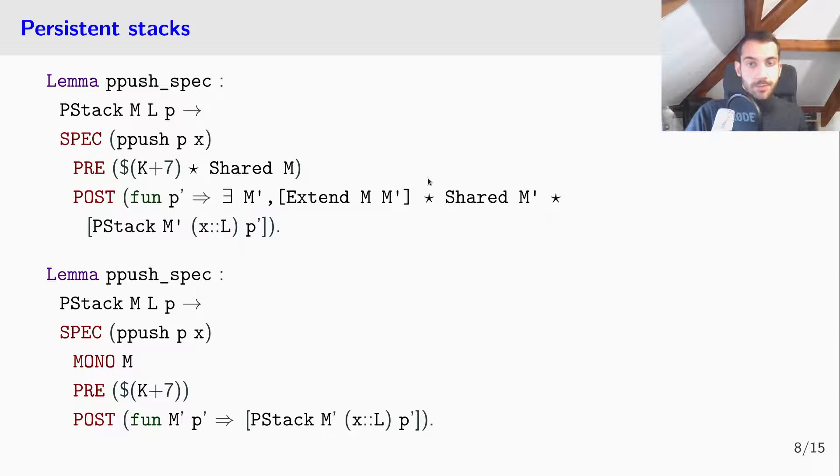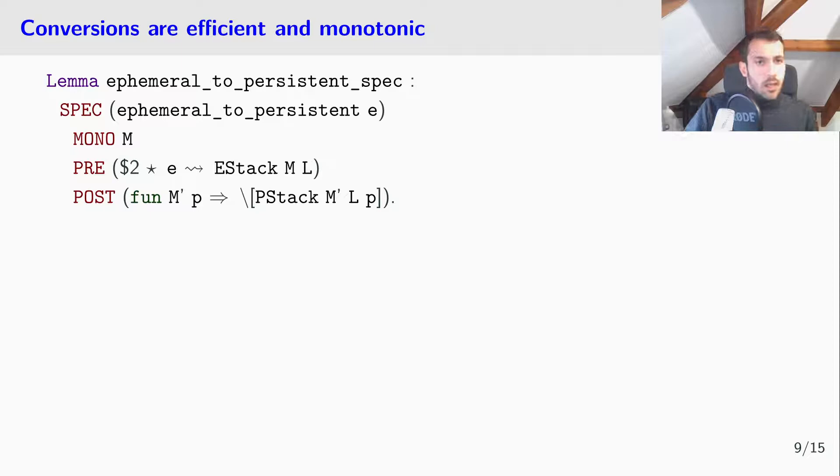Now, let's see conversions. For example, we can go from ephemeral to persistent. So, if I have a new stack e, which represents a stack of model l, then ephemeral_to_persistent will destruct this ephemeral stack and produce a new persistent stack p, which represents the same stack. Here, we require two time credits, so a constant number of time credits, so we are in constant time, and we are monotonic in the shared memory. Why? Because ephemeral_to_persistent will share all of the uniquely owned chunks of e.